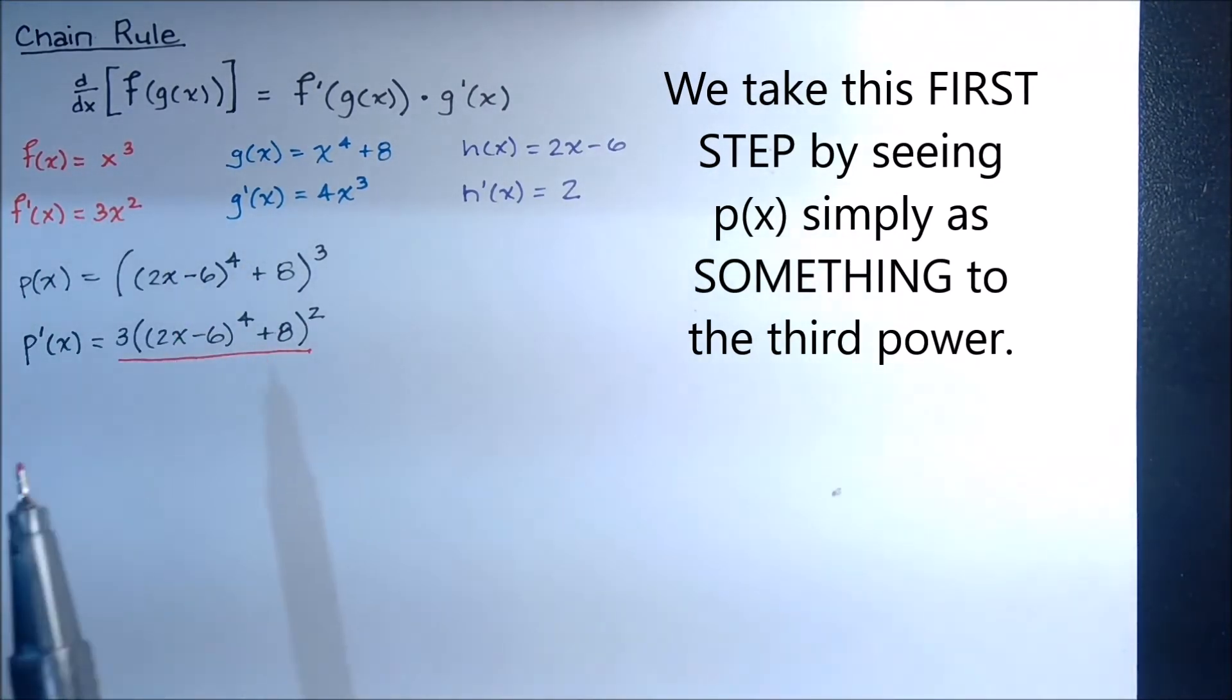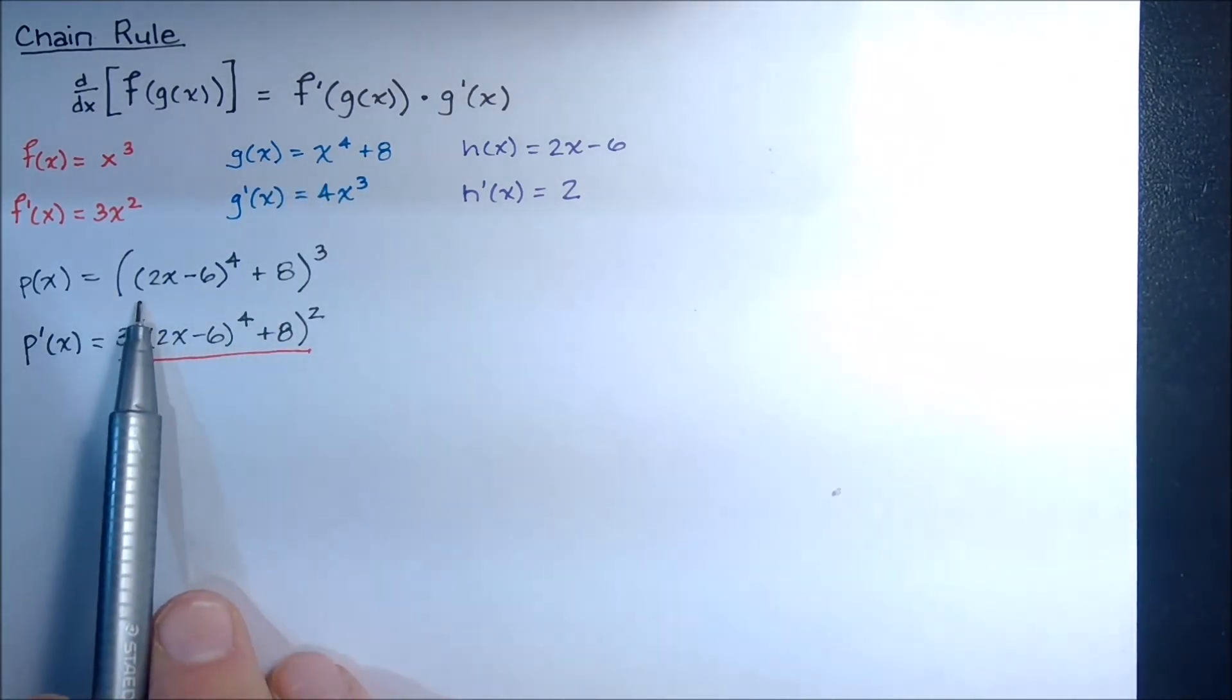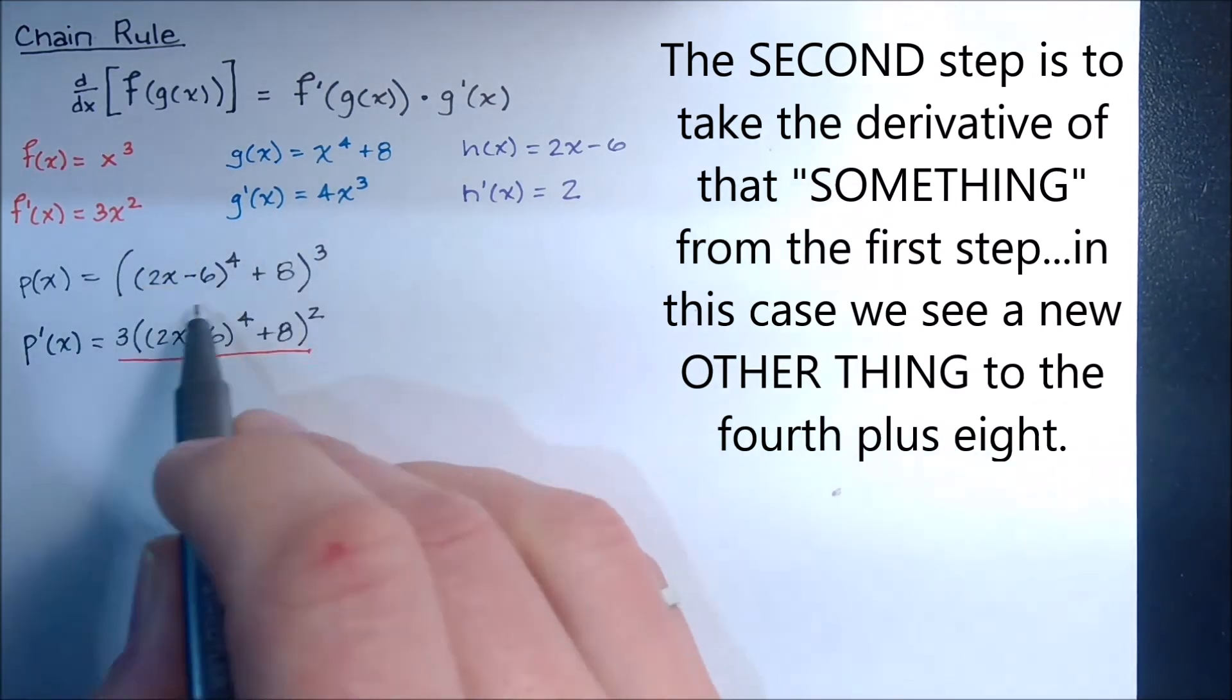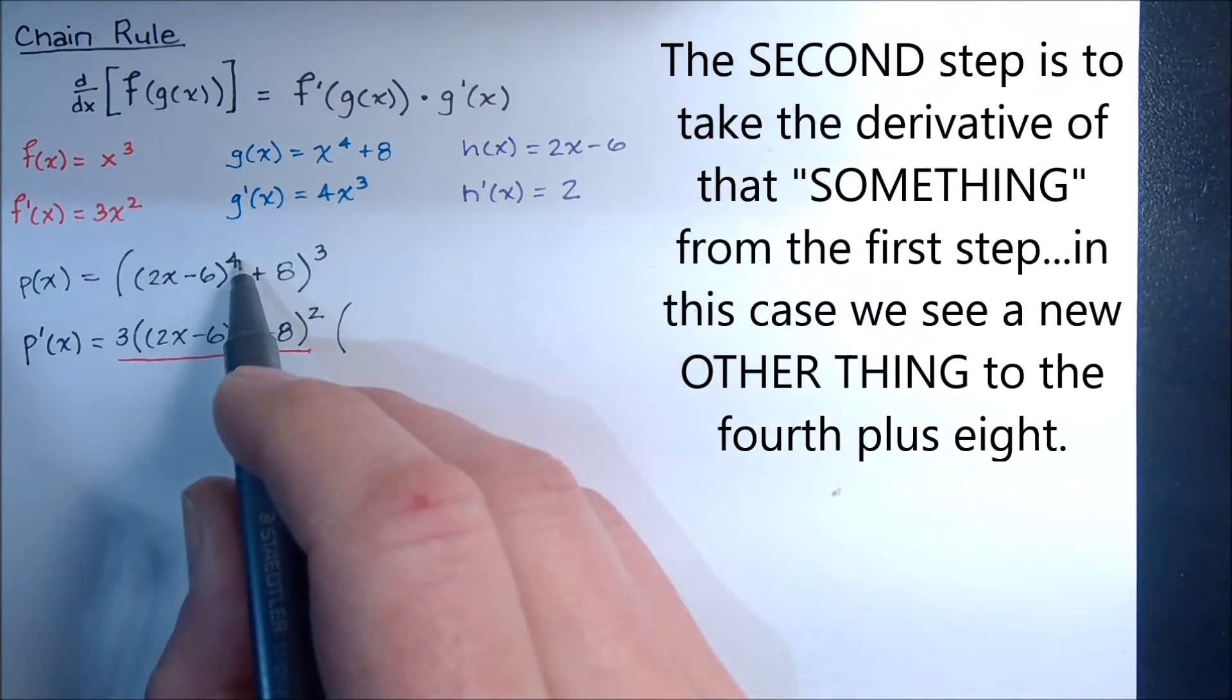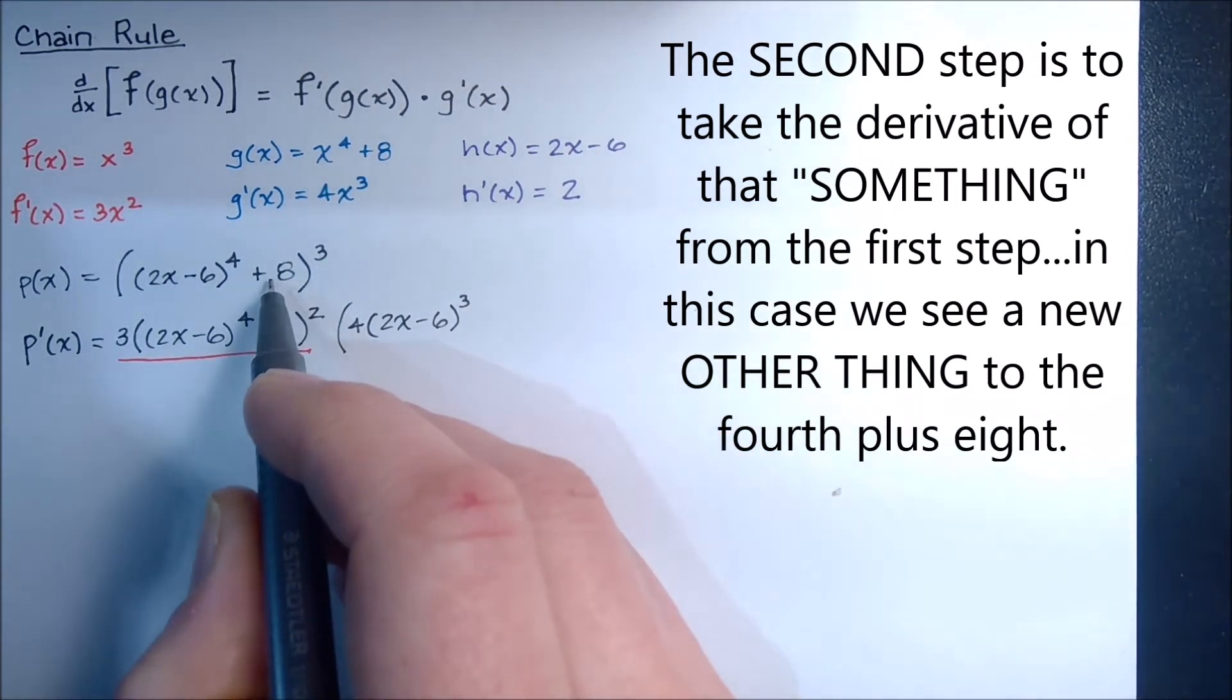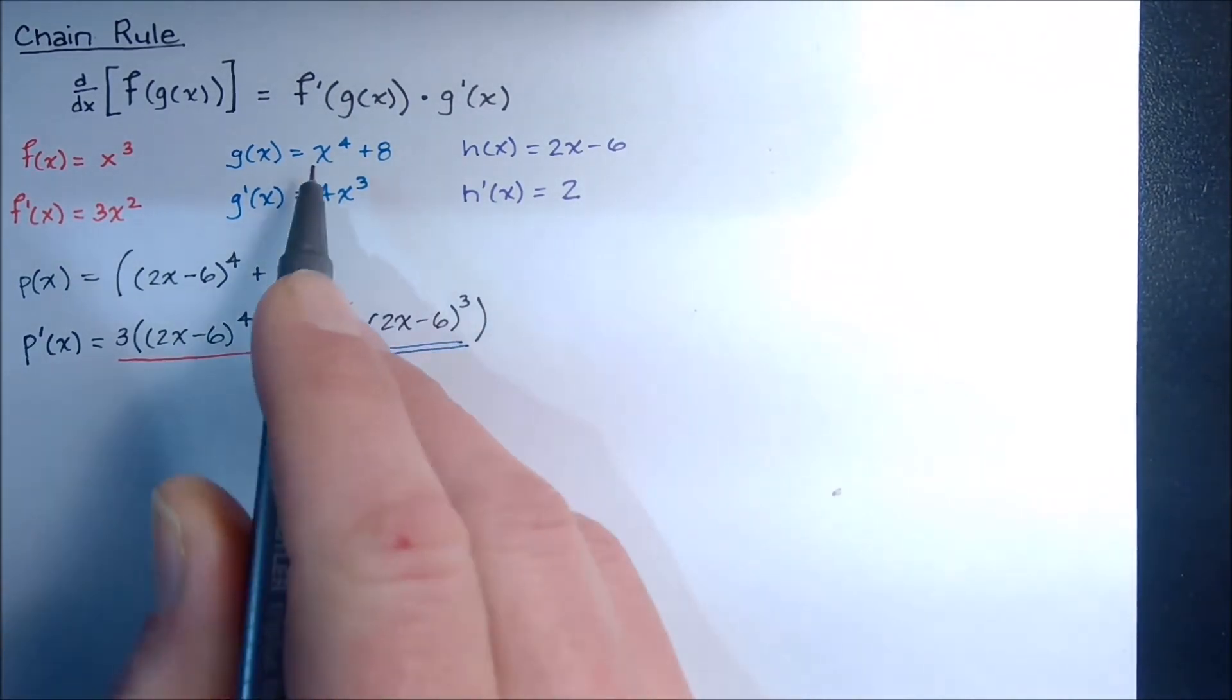Now, the next thing we're going to do, and we're not done yet, the next thing we need to do is actually multiply by the derivative of what was inside, because there is something inside. It's not just x cubed. It's something cubed. So if we take this piece in here and we multiply by that, let's see, 4 times whatever that was, 2x minus 6 to the 3rd power, and the derivative of 8 is gone. There we go.